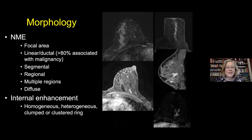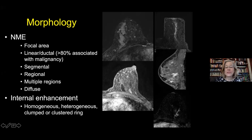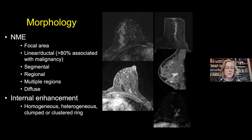For non-mass enhancement, we describe focal areas, linear ductal enhancement—which has a very high association with malignancy—segmental, regional, multiple regions, and diffuse enhancement—most of which are typically benign. The internal enhancement pattern can be homogeneous, heterogeneous, or show a clumped or clustered ring appearance with little rim-enhancing dots within an area. The clustered ring or clumped pattern is actually more likely malignant.